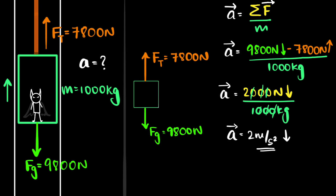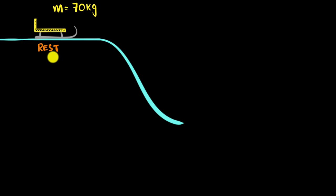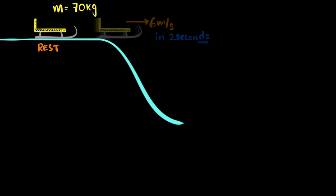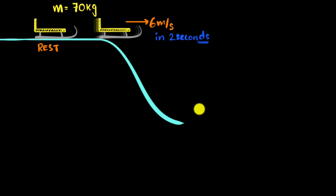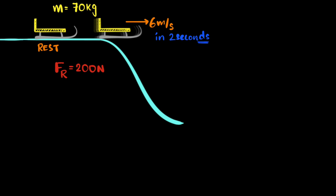Onto the next problem. This time we have a sledge at rest whose mass is 70 kilograms. Our goal is to push it and accelerate it to 6 meters per second in about 2 seconds so it can slide down and you can enjoy the ride. There will be some frictional force — even on ice — of about 200 Newtons. The question is: what force do we have to push with to achieve all of this?